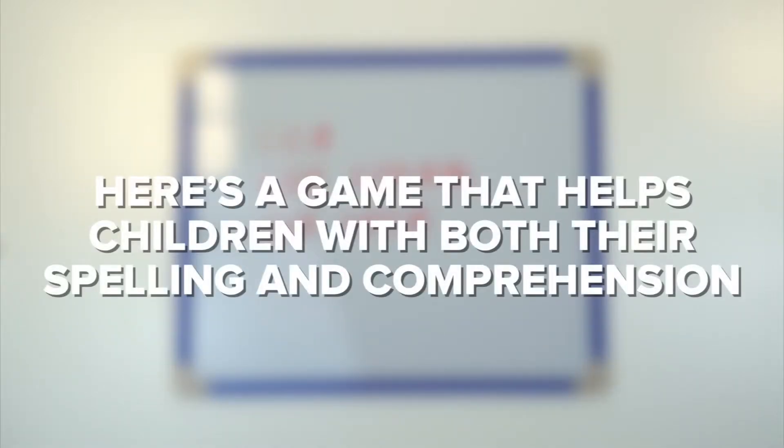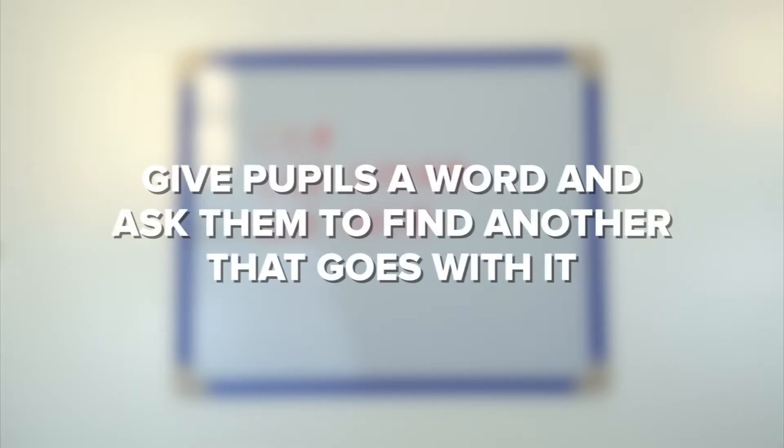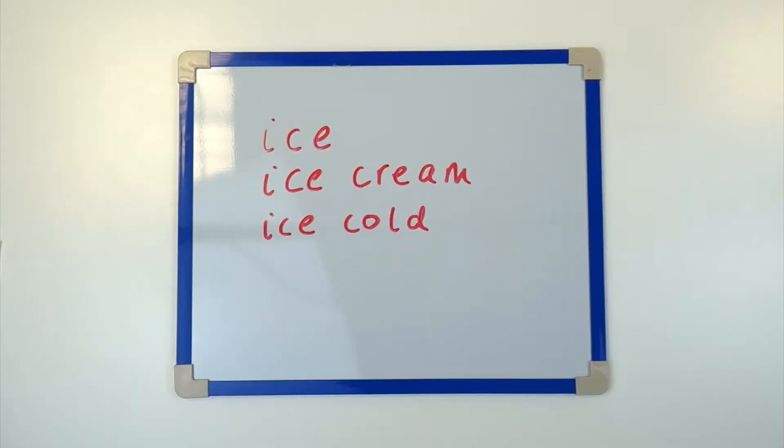Here's a game that helps children with both their spelling and comprehension. Start by giving pupils a word and asking them to find another that goes with it. So ice could become ice cream or ice cold.